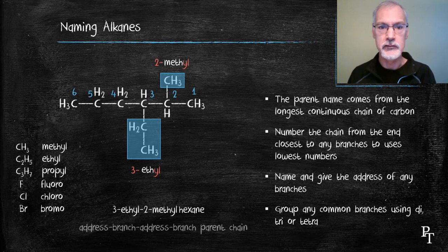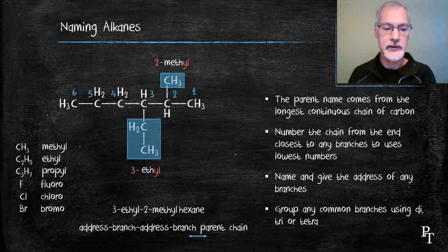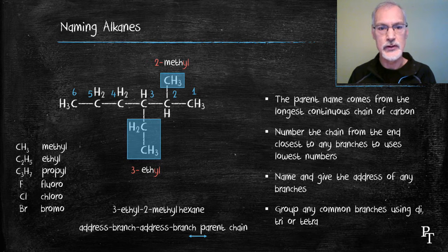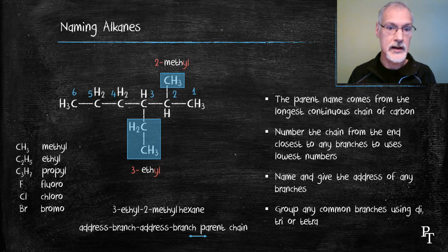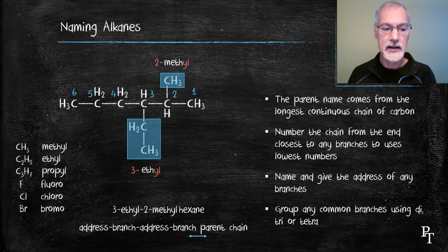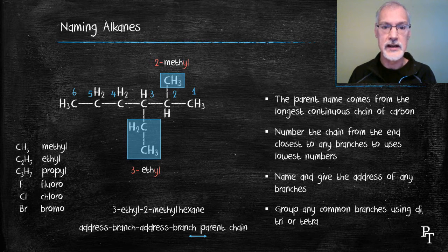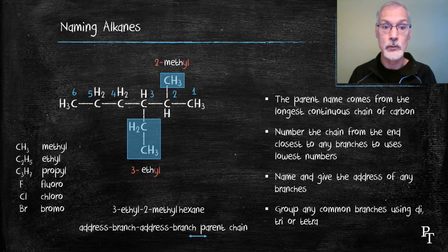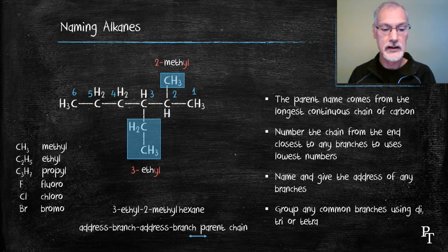And this is the general formula we use to name the molecules. We start off with an address or location, and then we name a branch. If there's more, then another address and another branch, all separated by hyphens. The final branch and parent name combination are merged together in one word, in this case, methylhexane.